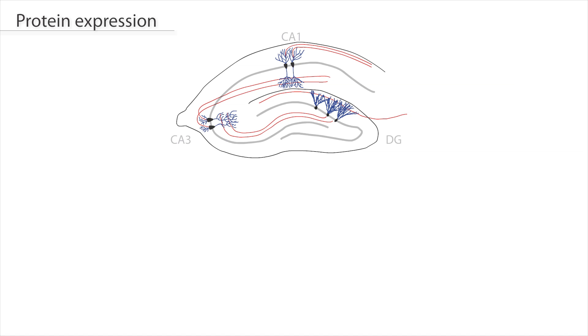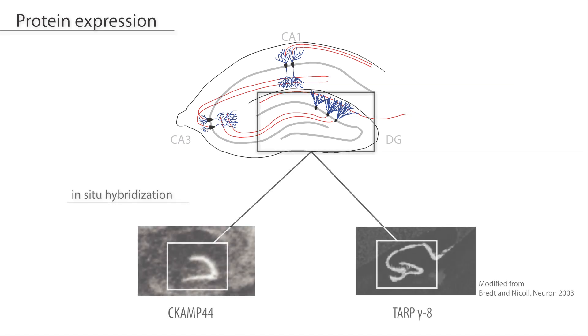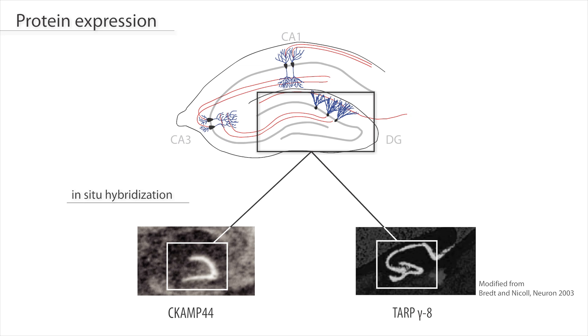Two of those proteins, TARP-γ8 and CKAMP44, exhibit particularly high expression levels and are likely to be two main AMPA receptor auxiliary subunits in granule cells.